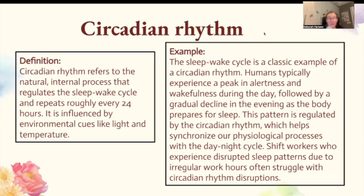Circadian rhythm. The circadian rhythm refers to the natural internal process that regulates the sleep-wake cycle and repeats roughly every 24 hours. It is influenced by environmental cues like light and temperature. The sleep-wake cycle is a classic example — humans typically experience peak alertness during the day, followed by a gradual decline in the evening as the body prepares for sleep. Shift workers who experience irregular hours often struggle with circadian rhythm disruptions.